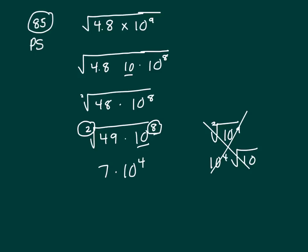Now, 7 times 10 to the 4th, this 4 means you're going to move the decimal 4 places to the right. The decimal's there. So 1, 2, 3, 4. So my radical is closest to 70,000, and that is answer B.